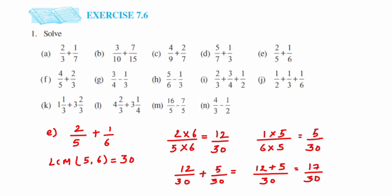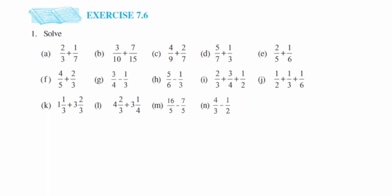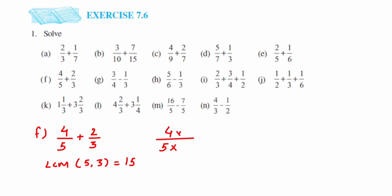Moving to problem F: we have 4 by 5 and 2 by 3. Again, denominators are different, so we take the LCM of 5 and 3, which is 15. For 4 by 5, we multiply by 3 to get 15, giving 12 upon 15. For the second number 2 by 3, we multiply by 5 to get 15, giving 10 upon 15.